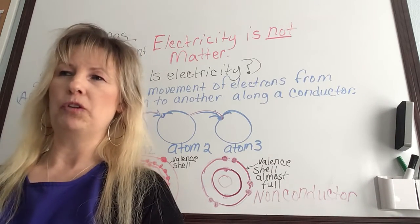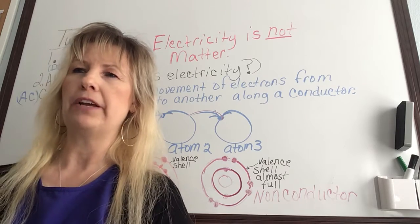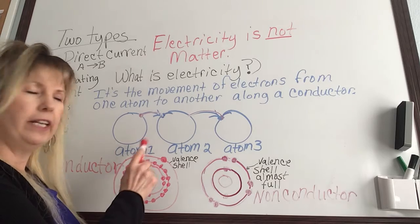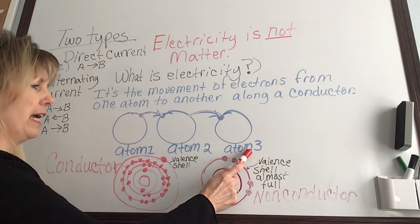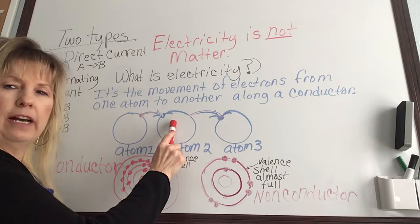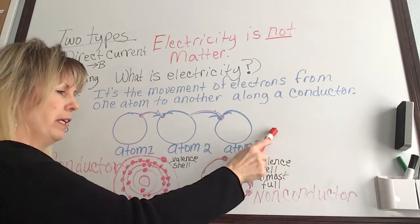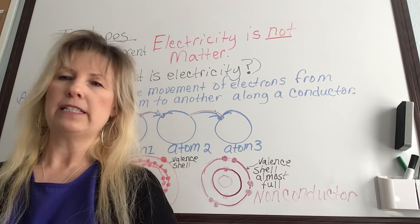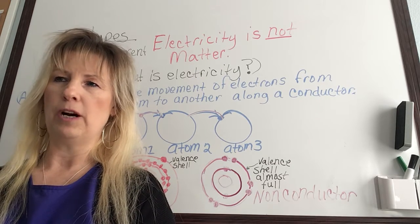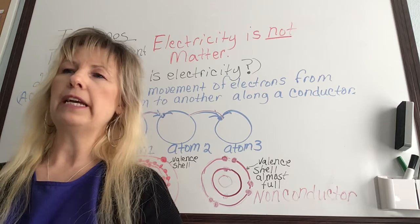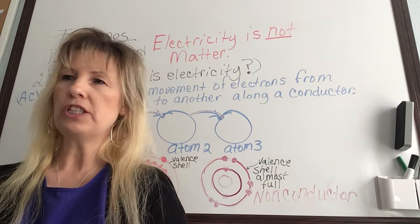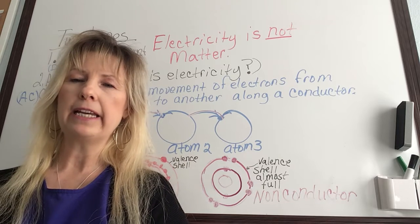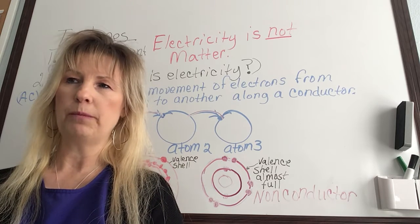Electricity is a movement of electrons from one atom to another along a conductor. Here we have atom 1, atom 2, and atom 3, and it is the movement of electrons from each atom. That's what electricity is — along a conductor, such as a copper wire. Electricity really is just a form of energy, and when in motion, it exhibits magnetic, chemical, and thermal effects.